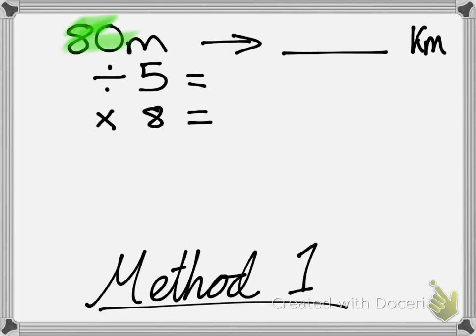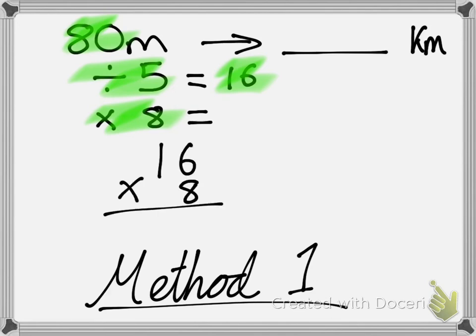80 divided by 5 is, how many 5s in 80? There's 16. Then I need to multiply 16 by 8. This is one of the downsides of method 1. I can't do that in my head, so I'm going to quickly do 8 times 6 is 48. Then 1 times 8 is 80. And if I add those together, I get 128.